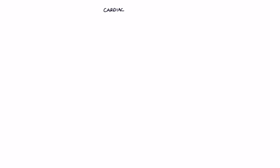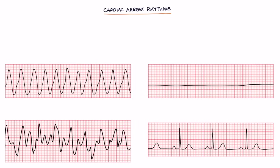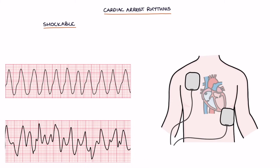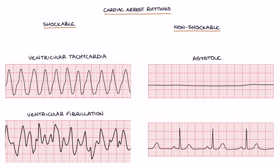There are four possible rhythms that can occur in a pulseless patient. These rhythms are either shockable, meaning that defibrillation may be effective, or non-shockable, meaning defibrillation will not be effective. The shockable rhythms are ventricular tachycardia and ventricular fibrillation. The two non-shockable rhythms are asystole, where there's no significant electrical activity, or pulseless electrical activity, which includes all electrical activity except ventricular fibrillation or ventricular tachycardia — including sinus rhythm with no pulse.